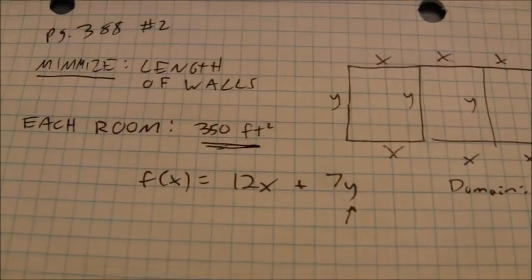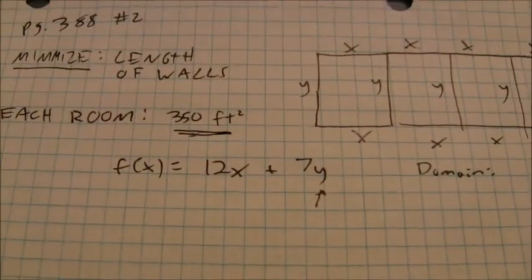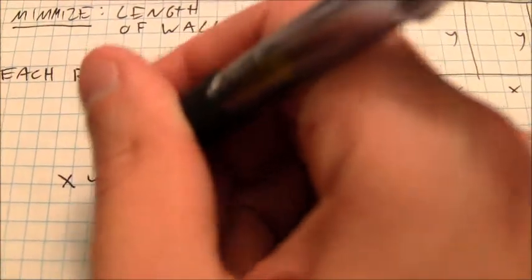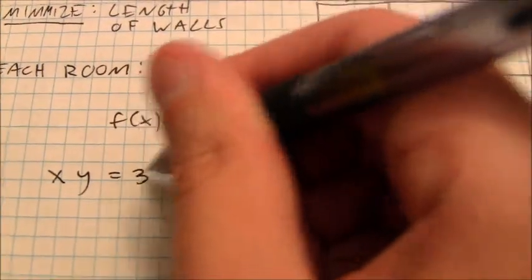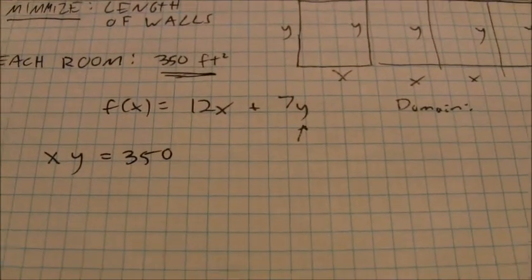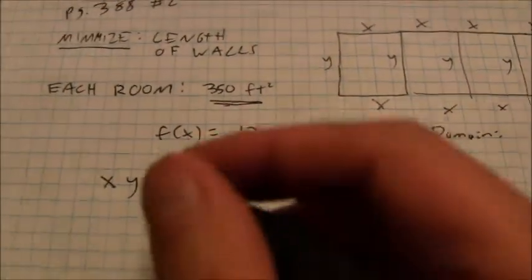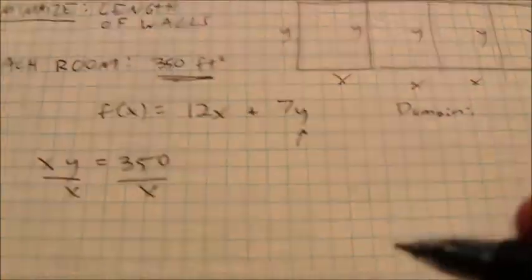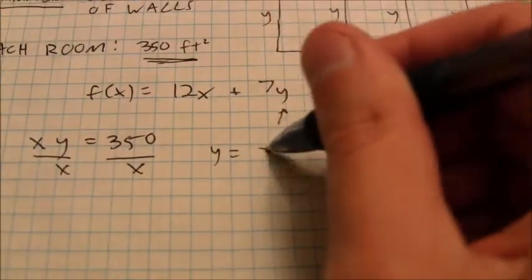Here in this case you'll notice that each room is 350 square feet. Well, how do you find the area of a room? You multiply the length times the width. X times y has to equal 350. So in this case I'm going to replace the y variable. I'm going to solve for y here, so I'll divide both sides by x. And I know that y is equal to 350 over x.